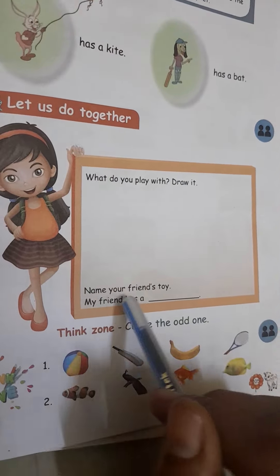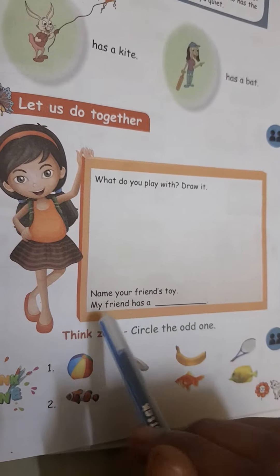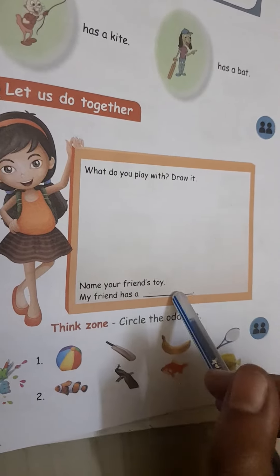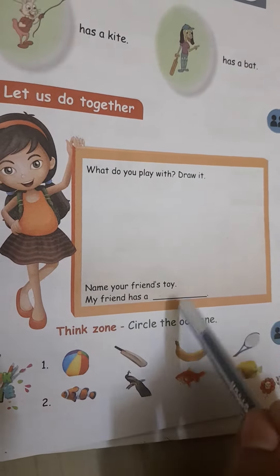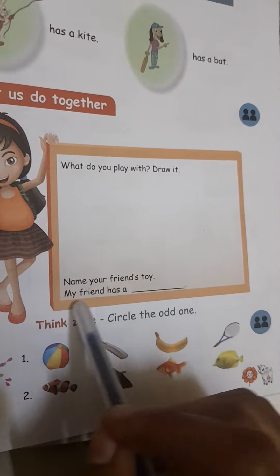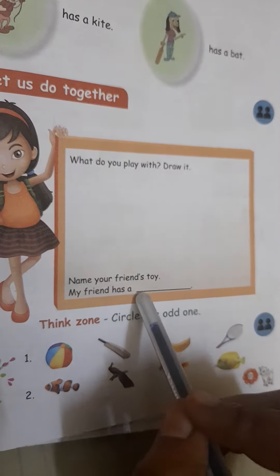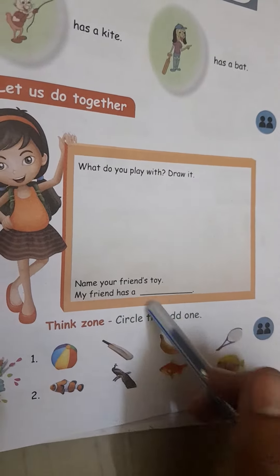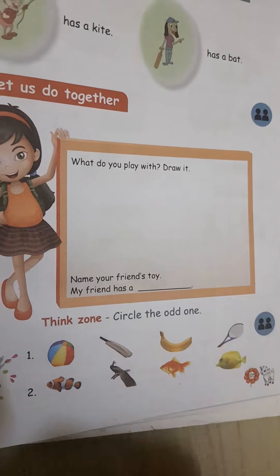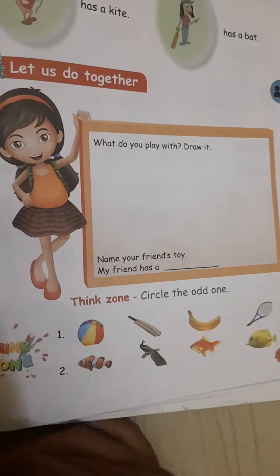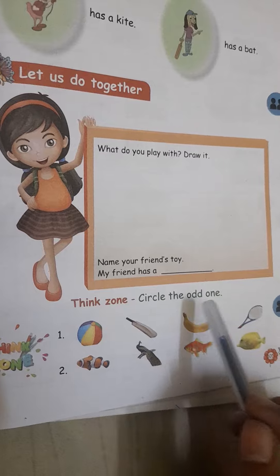Name your friend's toy. My friend has a — okay, name your friend's toy. You know, okay. My friend has a — which toy do you call other than the one you mentioned? Think so. Circle it.